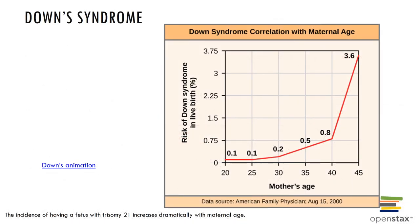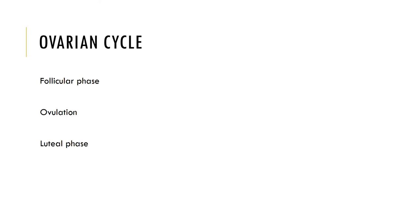This slide shows the correlation of Down syndrome with maternal age. The risk of Down syndrome, or having a fetus with trisomy 21, increases dramatically as the maternal age increases, as depicted in the figure. Now let's look at the ovarian cycle, which is divided into phases separated by ovulation.